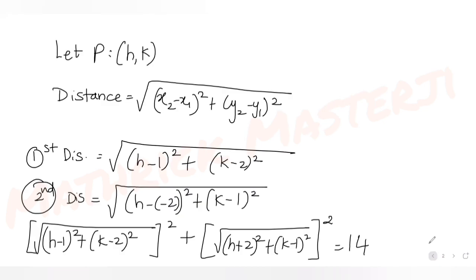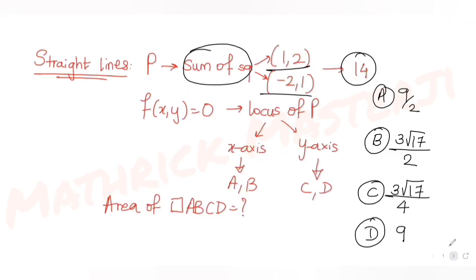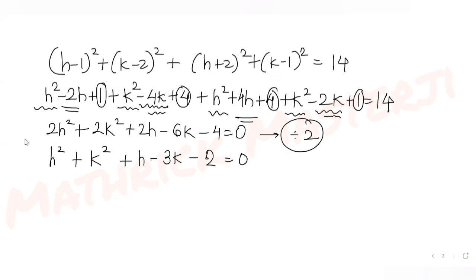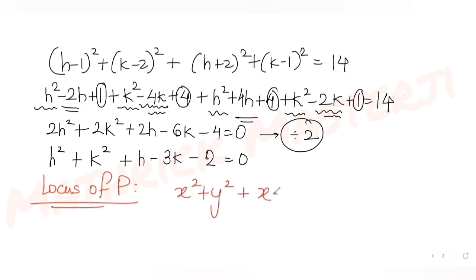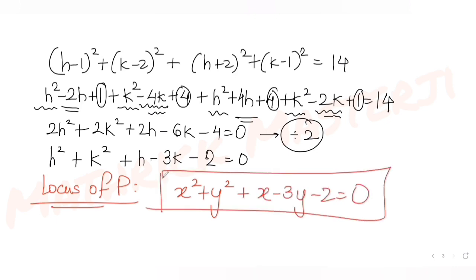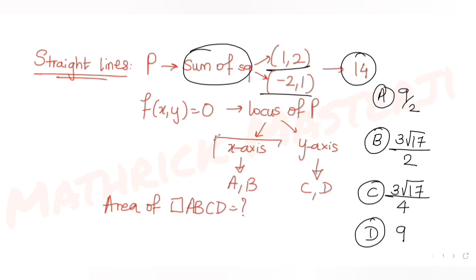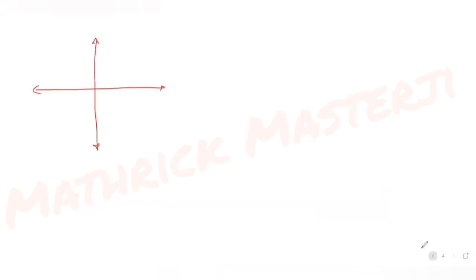The question tells us f(x,y) = 0 is the locus of point P, so we substitute x for h and y for k. The locus of point P becomes: x² + y² + x - 3y - 2 = 0. This is our locus equation.